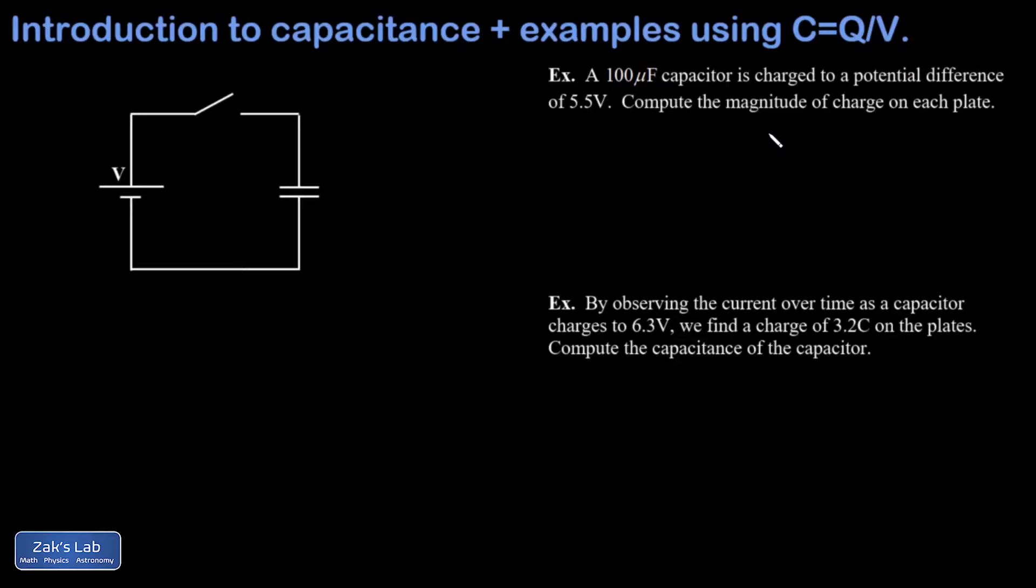It's important to realize here that batteries don't create charge, but they do cause charge to move around such that the potential difference across the terminals is equal to V. So when we close the switch, charge begins to flow in this circuit. And positive charge is going to build up on the upper plate until the potential there is equal to the potential at the high side of the battery. And then the charge flow is going to stop.